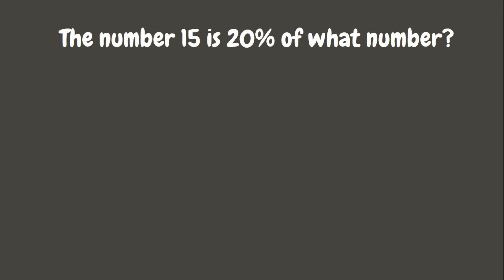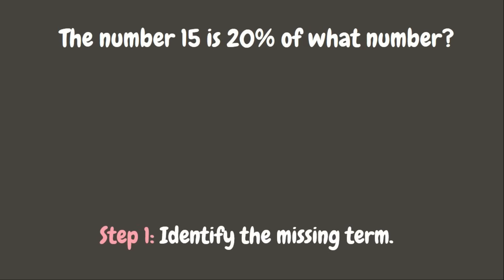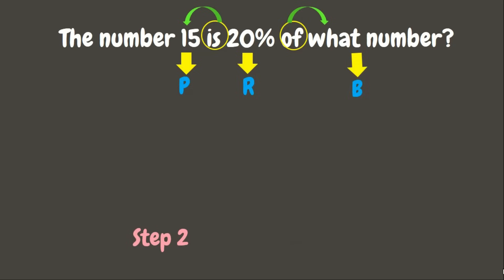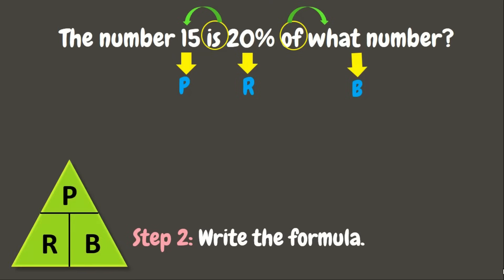Alright, we have another one. Let's identify the missing term. The one which has a percent sign is the rate. The number beside the word 'is' is the percentage. And the value that comes after the word 'of' is the base. This means that we are looking for the base. Now let's write the formula using our triangle. Since we are looking for the base, we need to divide percentage by the rate. This gives us the formula B equals P divided by R.